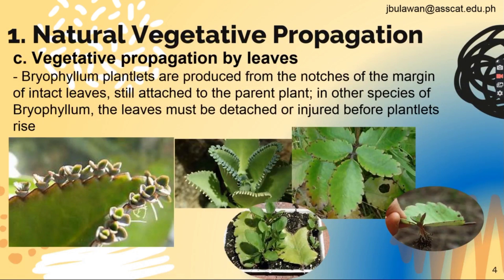Letter C: vegetative propagation by leaves, which is bryophyllum. Plantlets are produced from the notches of the margin of intact leaves still attached to the parent plant. In some species of bryophyllum, the leaves must be detached or injured before plantlets arise.